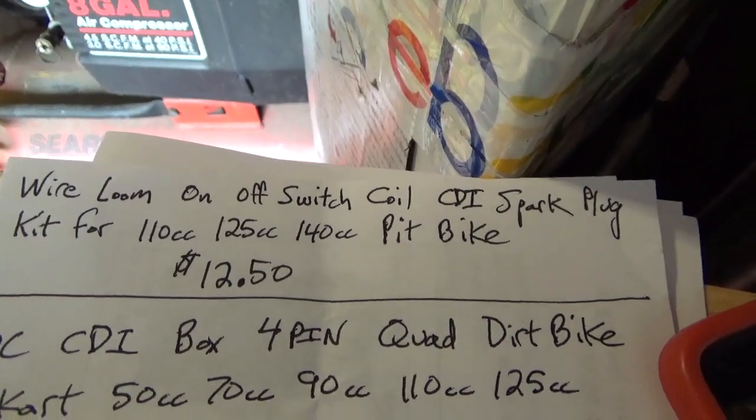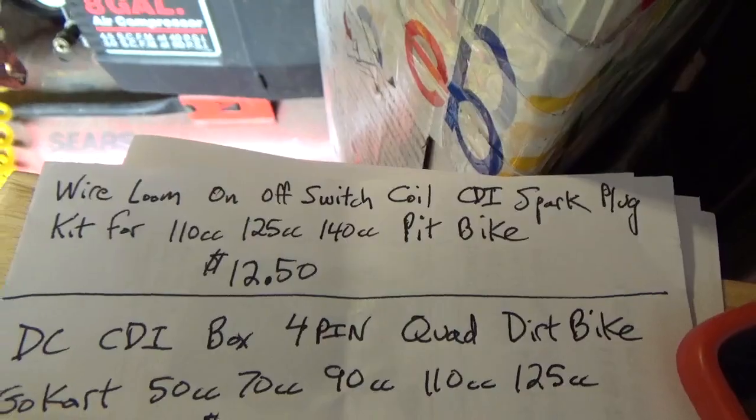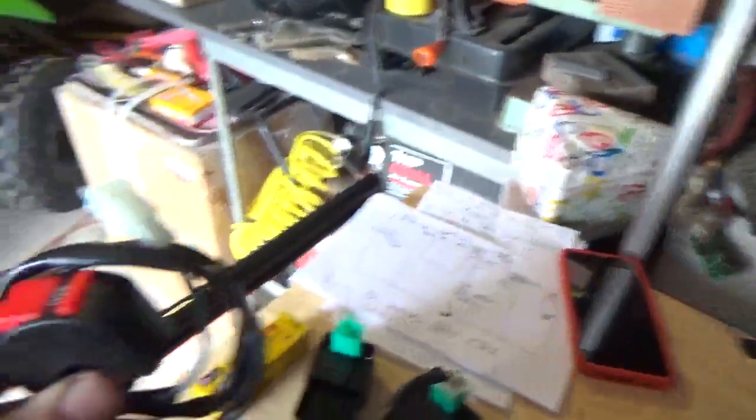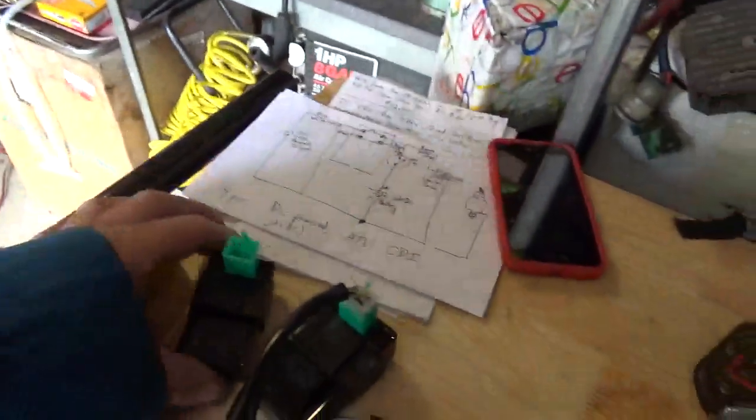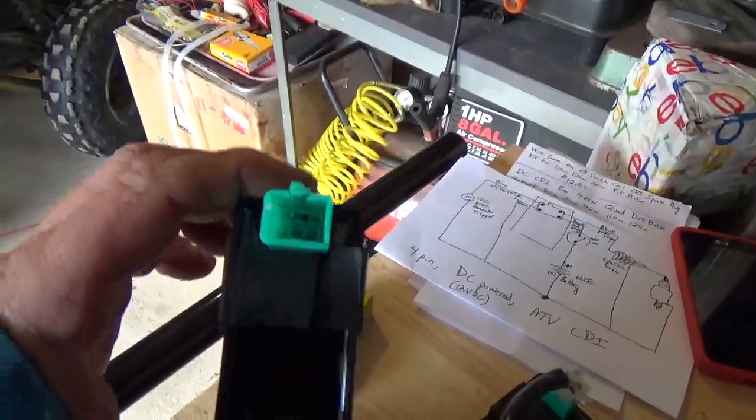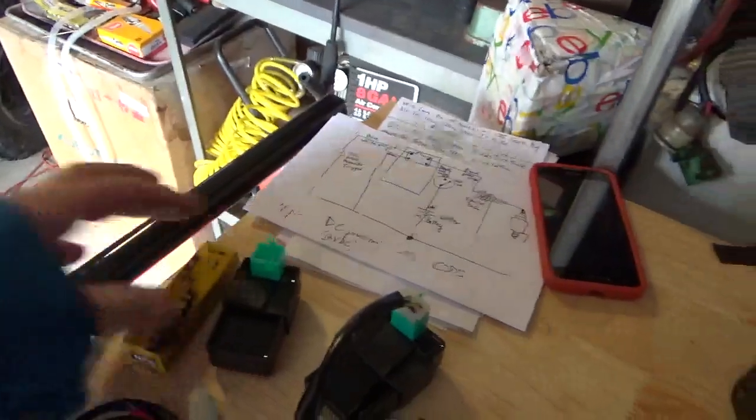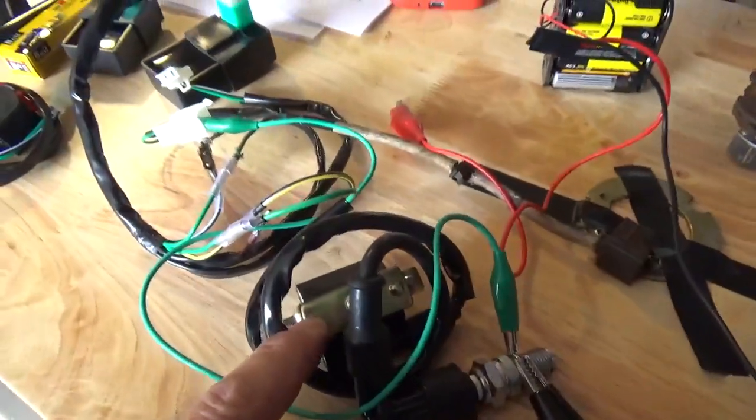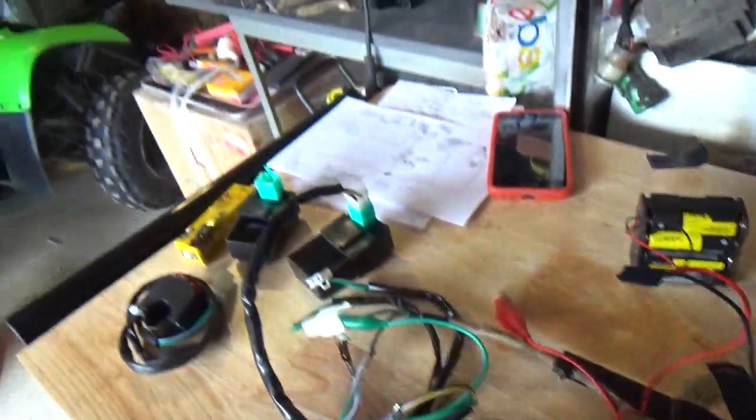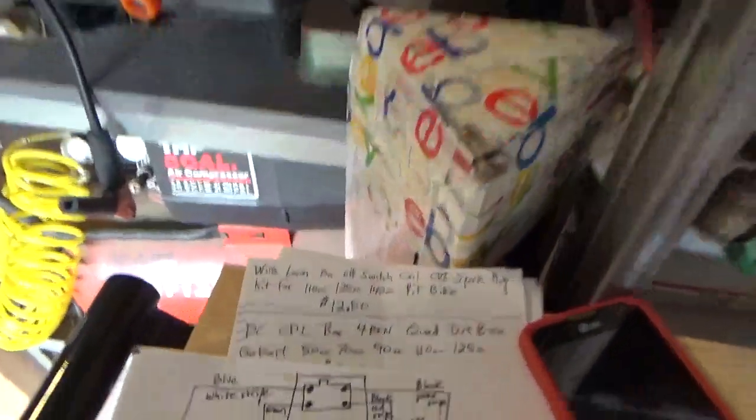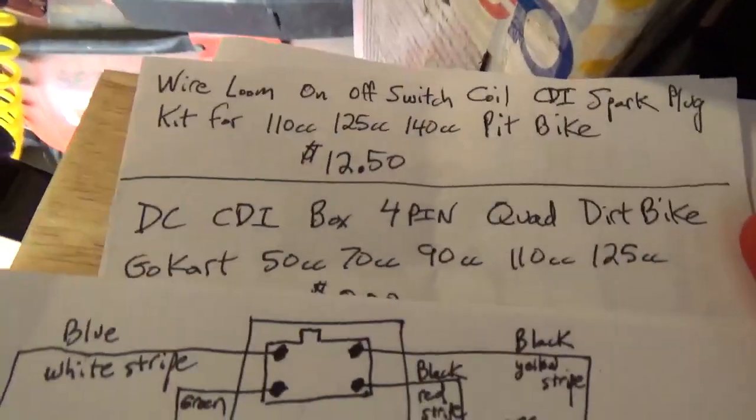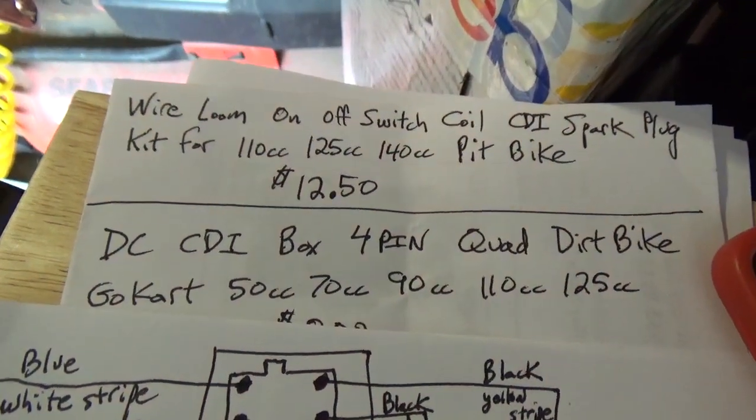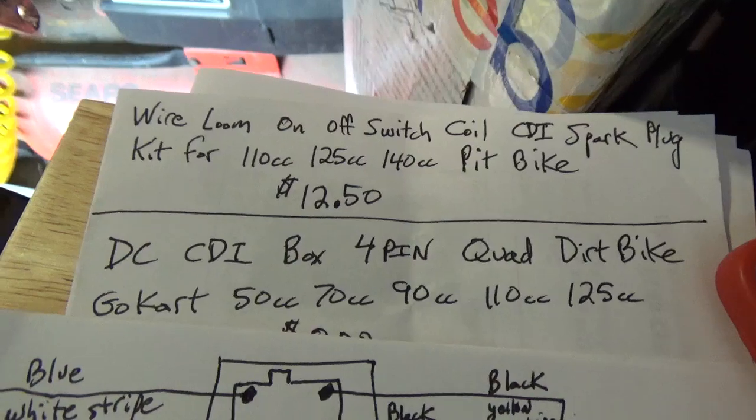Costs you $12.50, and this is what you get in the kit: you get the on and off switch, you get a spark plug, you get an AC CDI, you get the wire harness, and you get this coil right here.